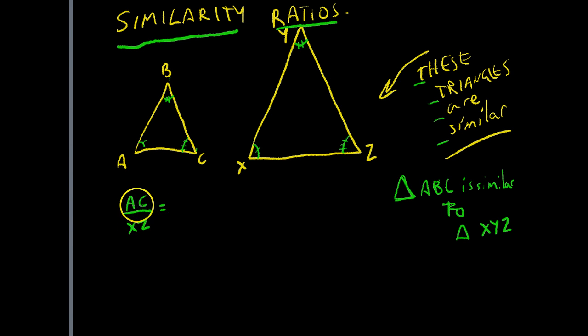It's going to be equal to the ratio of line AB divided by line XY, which is going to be equal to the ratio between line BC divided by line YZ.